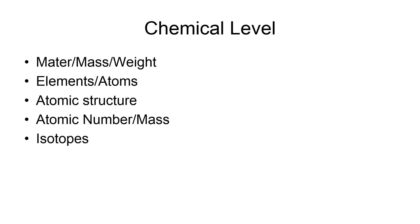At the chemical level of organization, we have to start with matter. Matter is anything that occupies space and has volume. Mass is the quantity of matter in a body. Weight is different — it is the force of attraction of the earth on a body, on a mass.